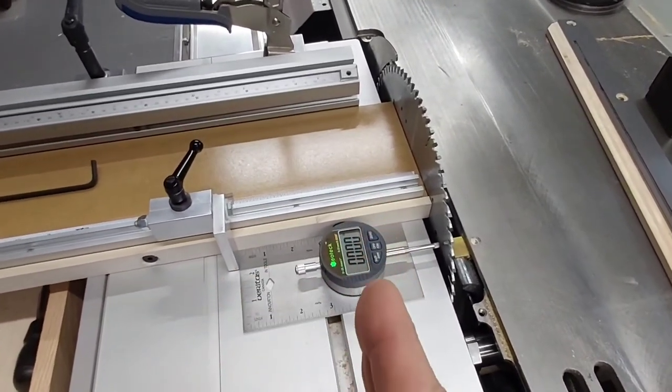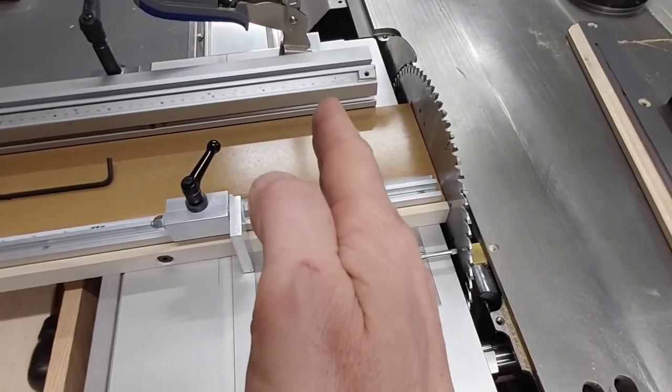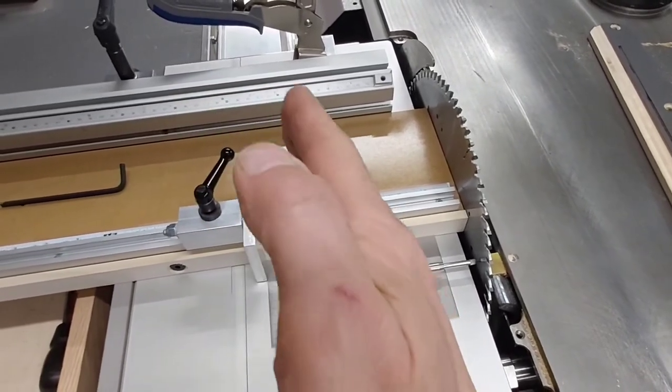So you either want your toe out to be zero, meaning you're perfectly parallel with the blade, or you want a slight bit of toe out, meaning you want the slider to move just a little bit away as the wood passes by the spinning blade.